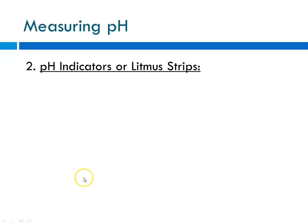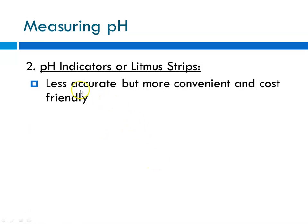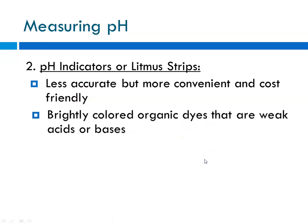The second method is to use pH indicators, and these have varying degrees of accuracy depending on what you're using. They're less accurate, but more convenient and more cost-friendly. Typically, they depend upon the use of brightly colored organic dyes that are either weak acids or weak bases.